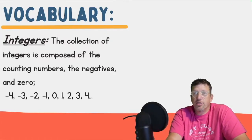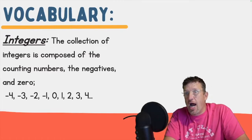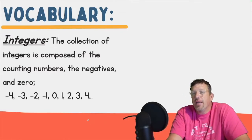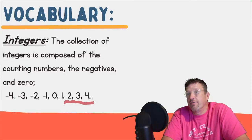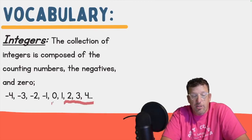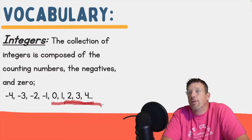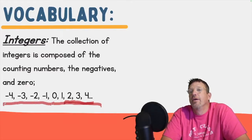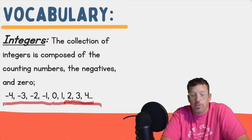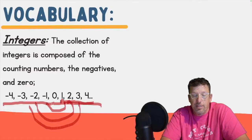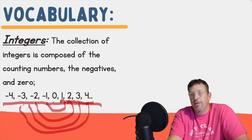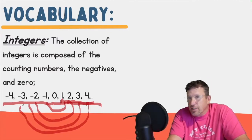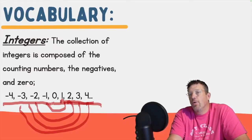Next we have integers. I have a video on integers — if you haven't watched it, you should go check it out. It's all those counting numbers — one, two, three, four, five, six, seven, eight, nine, ten, forever. Then we added zero, which means it's all the whole numbers. And it's also the opposites or the negative counterparts to our natural numbers. So for every one there's a negative one, for every two there's a negative two, and so on. No fractions, no decimals — just whole numbers and their opposites.